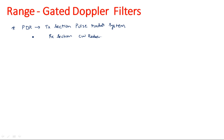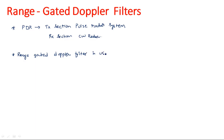In MTA radar, stationary and moving targets are separated using a delay line canceler. But in pulse Doppler radar, a range gated Doppler filter is the method used to eliminate stationary targets and identify moving targets. Both MTA radar and pulse Doppler radar are used to identify moving target information. A range gated Doppler filter is used in pulse Doppler radar to identify moving targets.